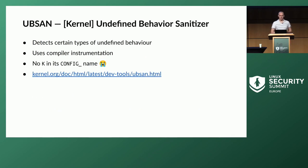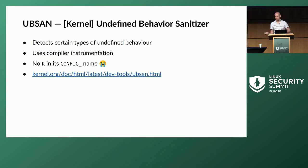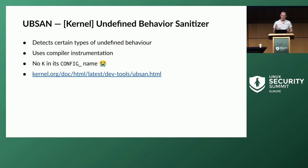Finally, we have UBSAN, the undefined behavior sanitizer, which finds different kinds of undefined behavior from the C standpoint. For example, if you have a 64-bit variable and you shift it by 64, that's undefined behavior per the C standard, and UBSAN finds these types of things. Notably, UBSAN doesn't have the letter K in its config name — that's just a legacy thing from when it was merged.